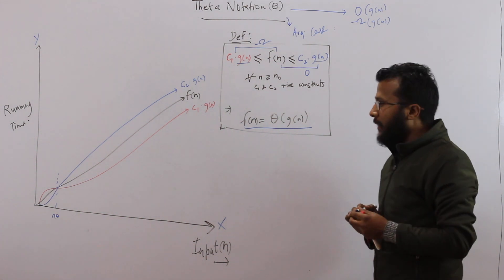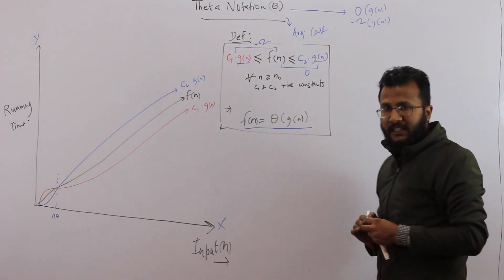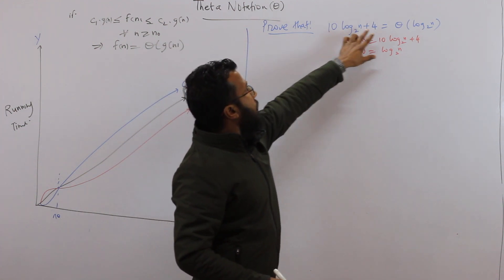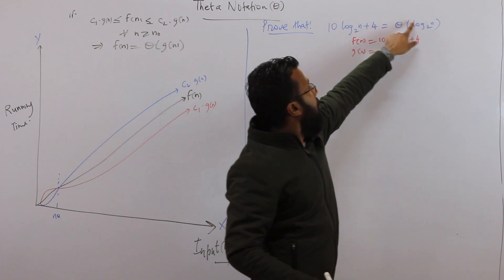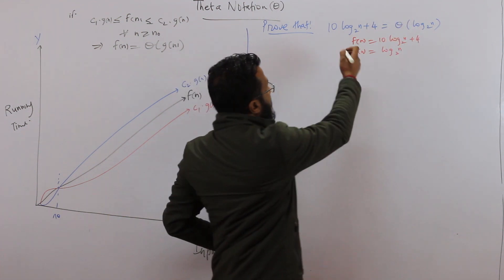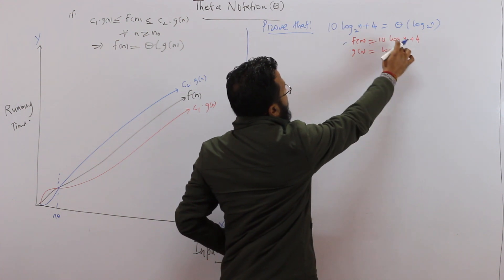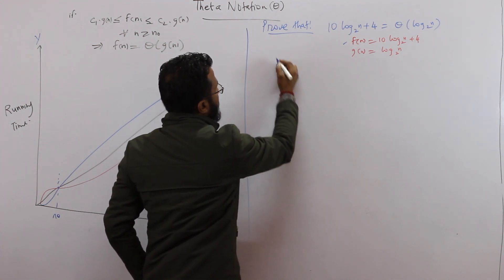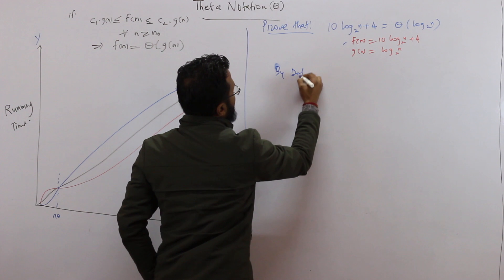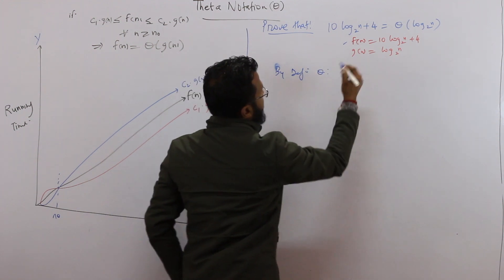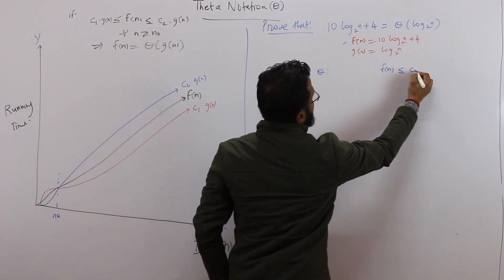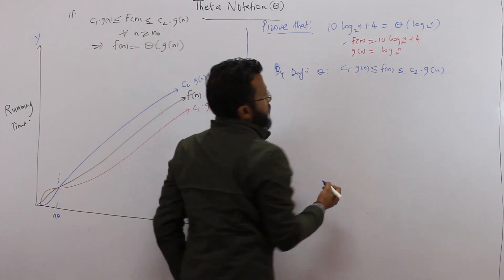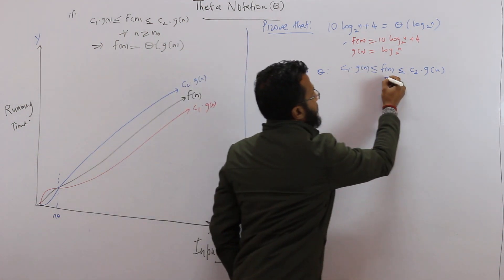Now let's look at an example. We have to prove that 10·log₂(n) + 4 is theta of log₂(n). Here f(n) = 10·log₂(n) + 4 and g(n) = log₂(n). By the definition of theta, we need to show that f(n) ≤ c₂·g(n) and f(n) ≥ c₁·g(n).